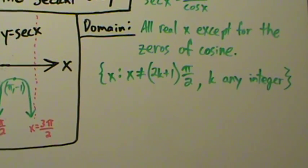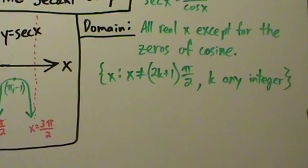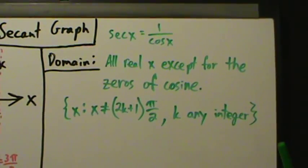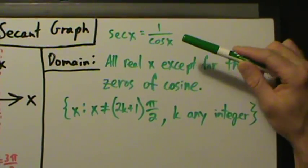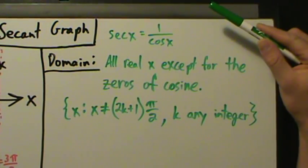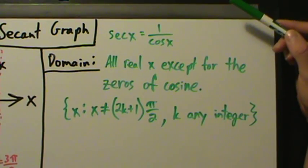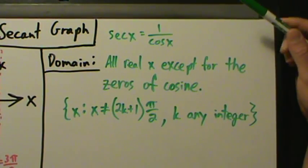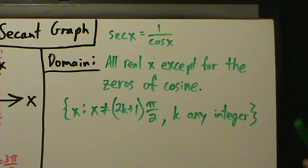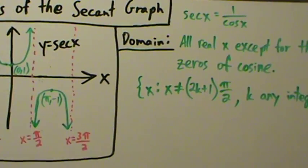Tangent and secant actually have the exact same domain. Remember, tangent is sine of x divided by cosine of x. The sine of x doesn't matter for the domain because it's on top. But tangent and secant have the same denominator, so they share the same domain.